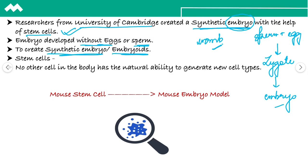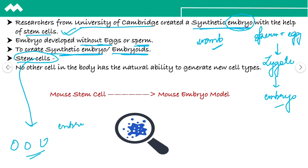Now, stem cells hote kya hai? Basically, stem cells are the special human cells jinkai paas ability hoti hai other cell types ko form karne ki. Stem cells bhi do types ki hoti hai: embryonic stem cells and adult stem cells.